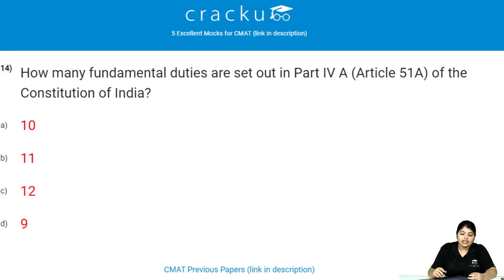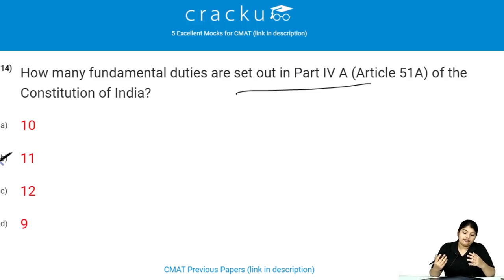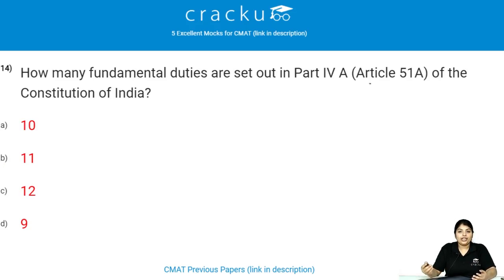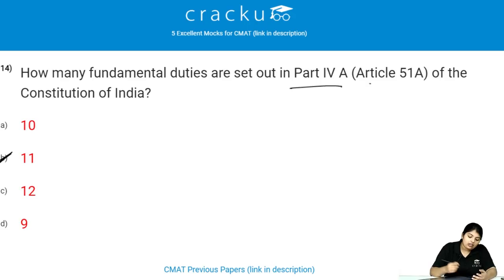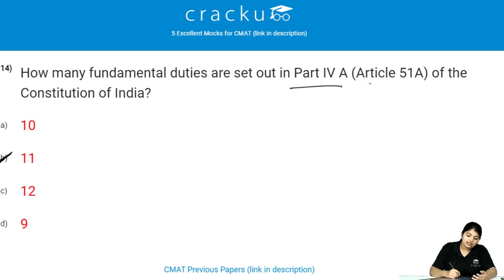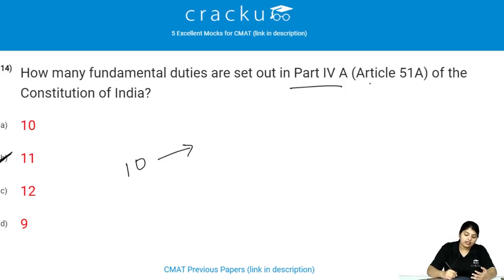How many fundamental duties are set out in Part 4A of the Indian constitution? There are 11 fundamental duties set out in Part 4A of the constitution of India. Previously there were 10, but one more fundamental duty was added in the year 2002.